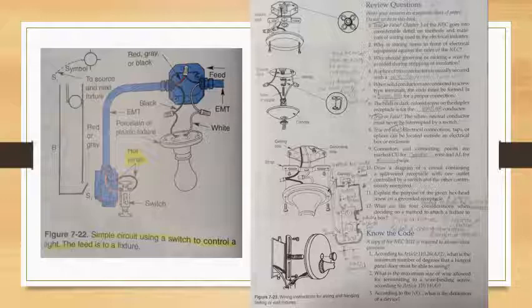And the know the code portion of these questions. Number 1. According to article 110.26A2, what is the minimum number of degrees that a hinged panel door must be able to swing? And if you find on the 2017 NEC page 70-47, it would be 90 degrees. Question 2. What is the maximum size of wire allowed for terminating to a wire binding screw according to article 110.14 of the NEC? That is article 110.14A. And according to the NEC 2017, page 70-45, that is 10 AWG maximum size for the allowed wire for terminating to a wire binding screw.